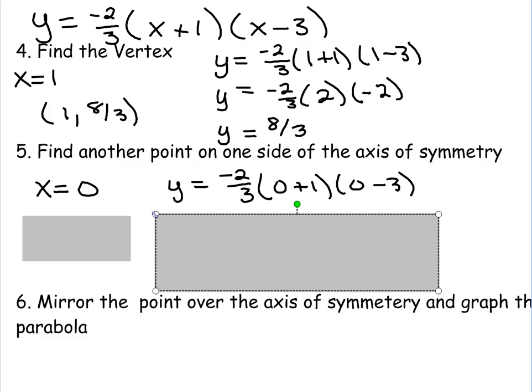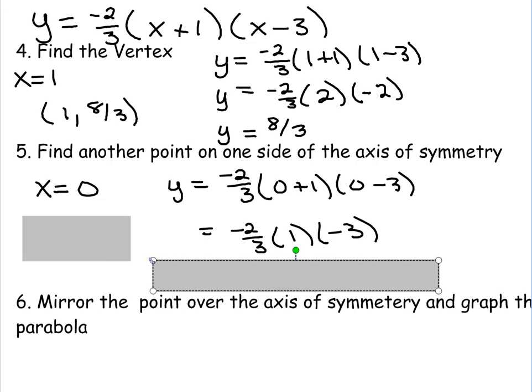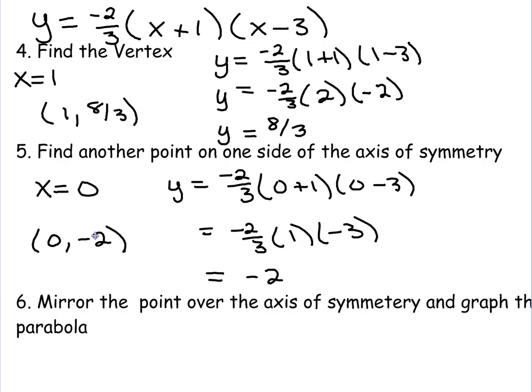So I have zero in there for the X on both of them. So we have zero plus one is one. Zero minus three is negative three. Then I multiply those out, and I end up getting negative two. So in this case, my other point is zero, negative two.